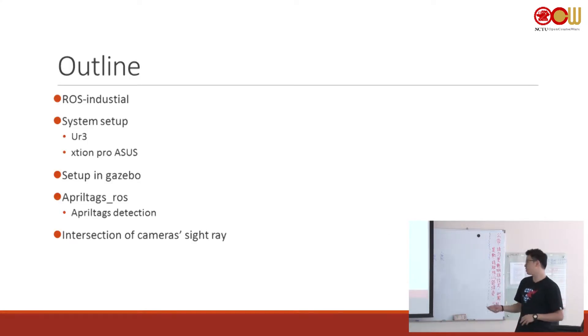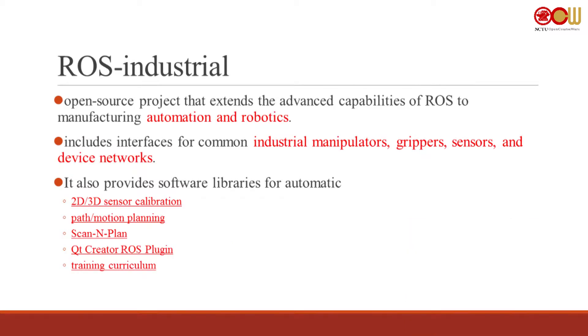The outline will be the same from last week. First it's ROS Industrial, then the setup, then Gazebo, and after that the AprilTag Detector. We are adding some new topics, including the intersection of the camera's rays, which I will explain later. So I will rapidly run through this boring stuff.